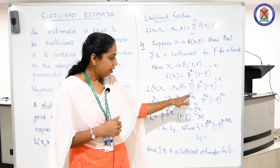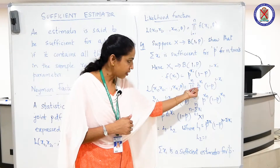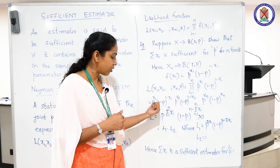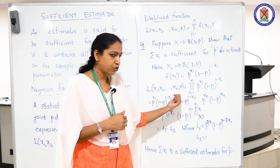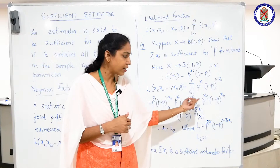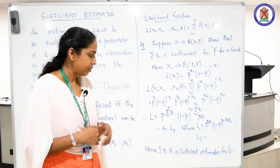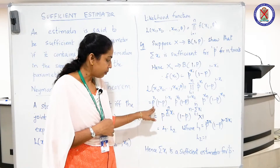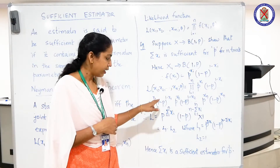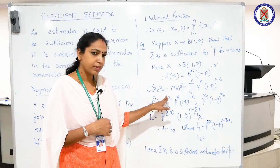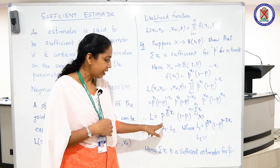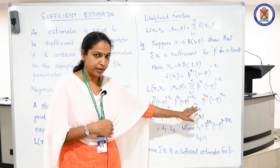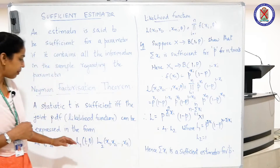Using this density in the product form, we get p^x1 * (1-p)^(1-x1) * p^x2 * (1-p)^(1-x2) * ... * p^xn * (1-p)^(1-xn). Collecting the powers of p and (1-p), this can be written as p^(Σxi) * (1-p)^(n - Σxi). This is now in the form required by the Neyman factorization theorem.